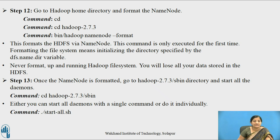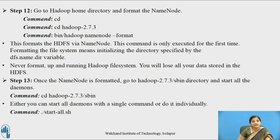Go to the Hadoop home directory and format the NameNode. We change to directory Hadoop 2.7.3 and format the NameNode. This formats HDFS via the NameNode and is only executed for the first time. It initializes the directory specified by the dfs.name.dir variable. Remember: never format a running Hadoop file system, or else you will lose all the data stored in HDFS.